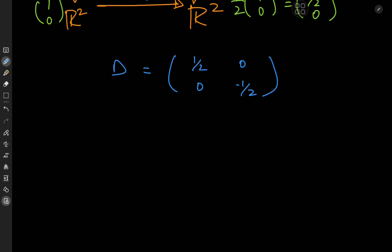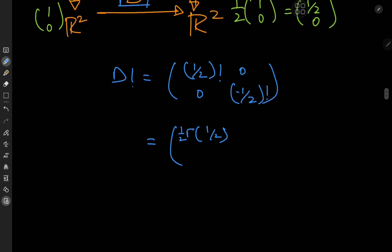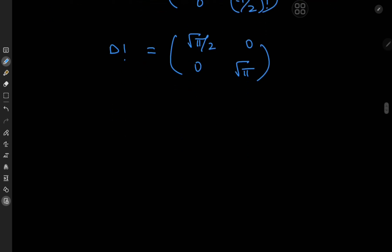The factorial of this matrix just means taking the factorial of the elements in the principal diagonal. So what is 1 half factorial? That would be gamma 3 halves, and gamma 3 halves is gamma 1 half times 1 half, and gamma 1 half is famously root pi. So we get root pi by 2 here, 0 here, 0 there, and negative 1 half factorial is gamma 1 half, which is again root pi. This is the factorial of the derivative operator in our vector space V.